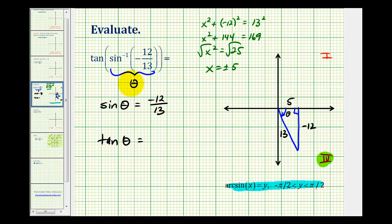So now that we've modeled angle theta, we want to determine the tangent of angle theta to evaluate this expression. And that would be the ratio of the length of the opposite side to the length of the adjacent side, or negative twelve-fifths. So this expression simplifies to negative twelve-fifths.